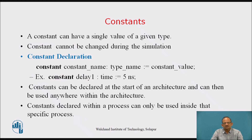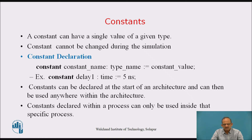Constants can have a single value of a given type and cannot be changed during simulation. Once a constant is declared and initialized, its value cannot be changed, whereas signals and variables can be changed. Declaration syntax: 'constant name : type := value'. For example: 'constant delay1 : time := 5 ns' — wherever delay1 is used, the time will be 5 nanoseconds and cannot be changed. Constants declared at the start of architecture can be used anywhere within it; constants declared within a process can only be used inside that specific process.